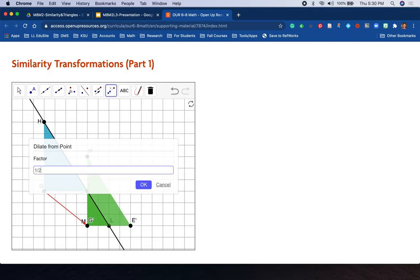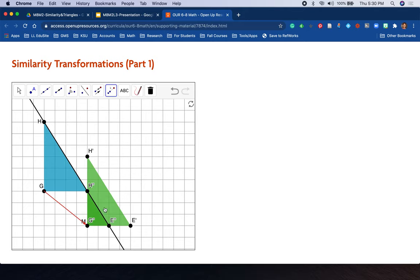And so I could put this in as 1 half, or as 0.5, and there you can see H double prime, G double prime, E double prime, and the reason for that label is because we've moved it and transformed it twice. So we have our first transformation to H prime, G prime, E prime, as a translation. And then a dilation for the scale factor less than 1, specifically 1 half.